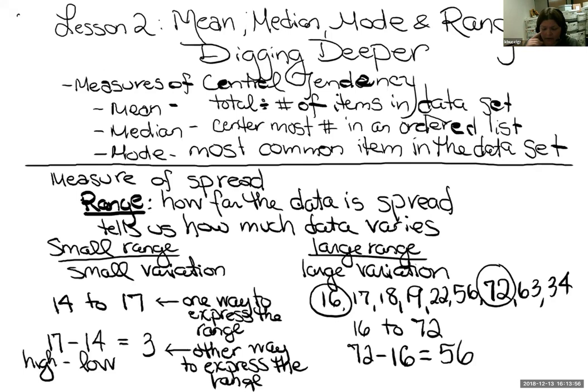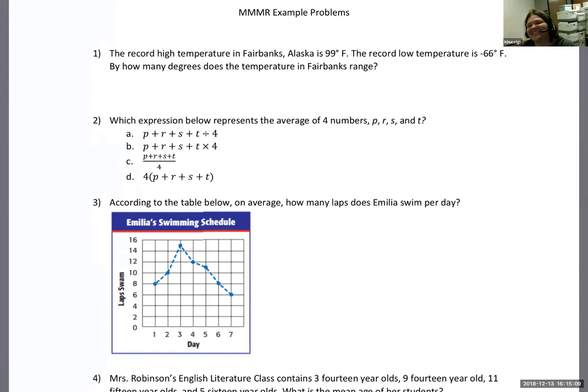Now we know all our measures of central tendency — mean, median, mode — and how to find a range. Let's look at some more typical GED-style problems. I've mixed them all up, because the GED test is mixed up. You're going to have to think each time: what are we doing here? The problems we did last video were more simplistic — I expect higher complexity on the GED. They like to combine charts, graphs, tables, math concepts, and word problems.